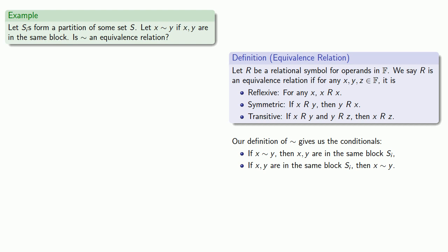Finally, we need to check transitivity. So again, we can always assume the antecedent of a conditional. So suppose x squiggle y and y squiggle z. We can set that our destination, x squiggle z. If x squiggle y, then we know that x and y are in the same block, si. And y z are both in sj for some j.